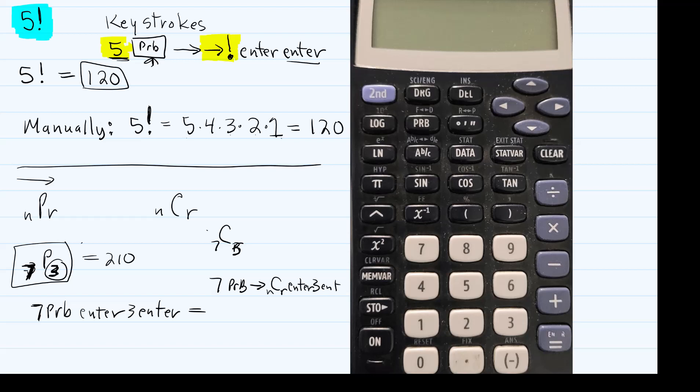So seven, PRB, and then I'm gonna arrow over one time for the combination button, type three, enter. And for this, we get 35.